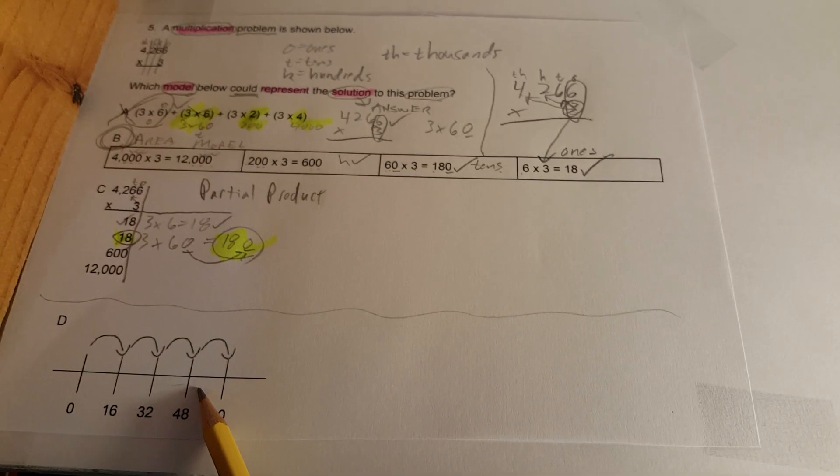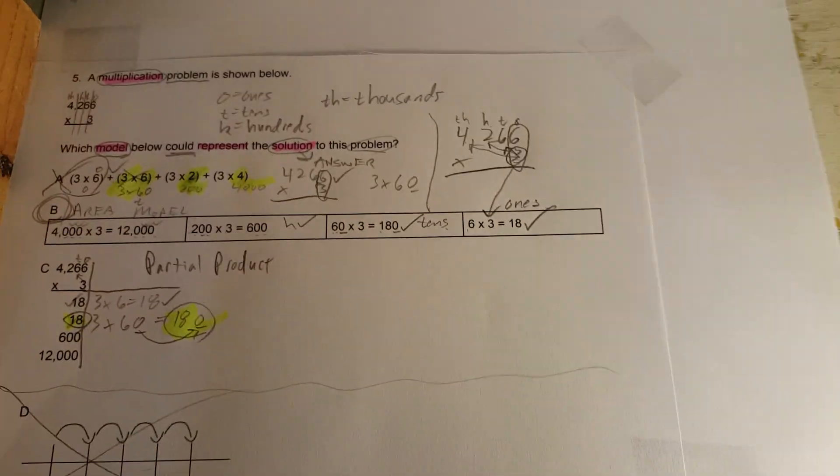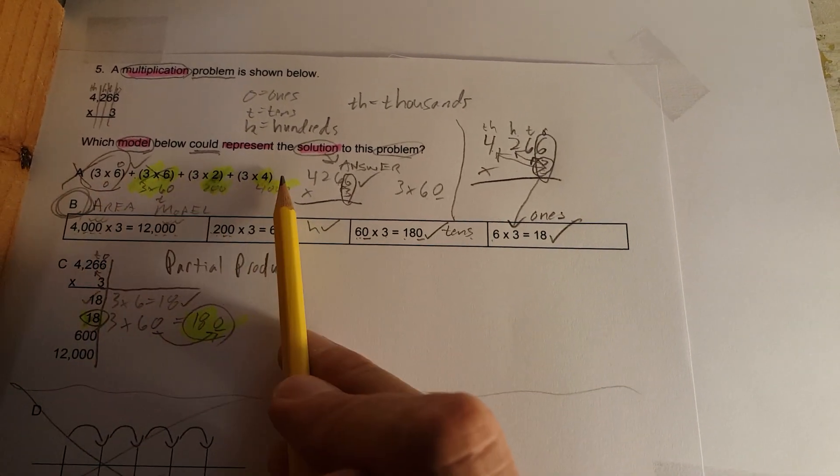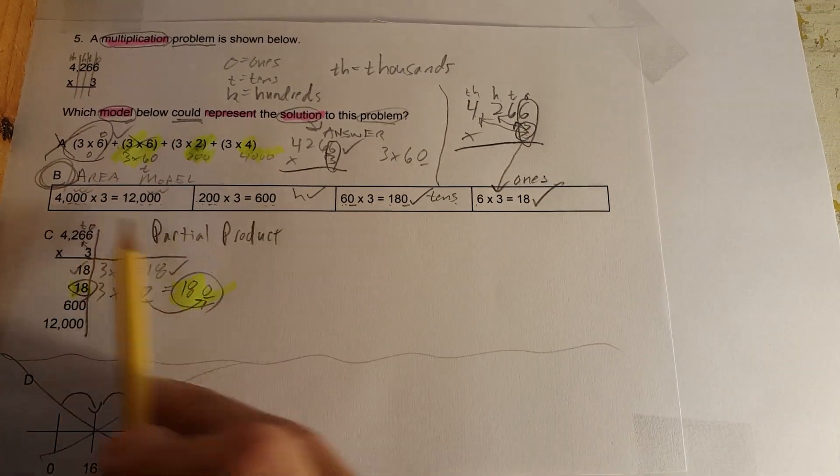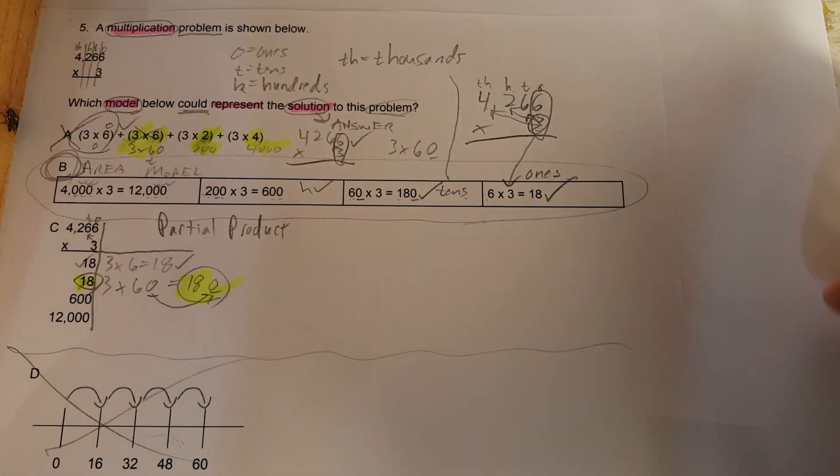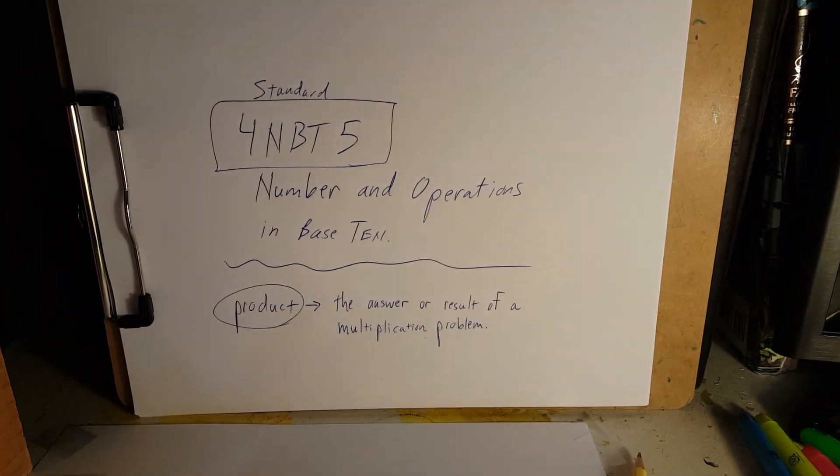For this problem you got area model, partial product, and distributive. The correct way of solving this problem is through this model, which is B. Hope that helps. Have a good one. Keep practicing. See ya.